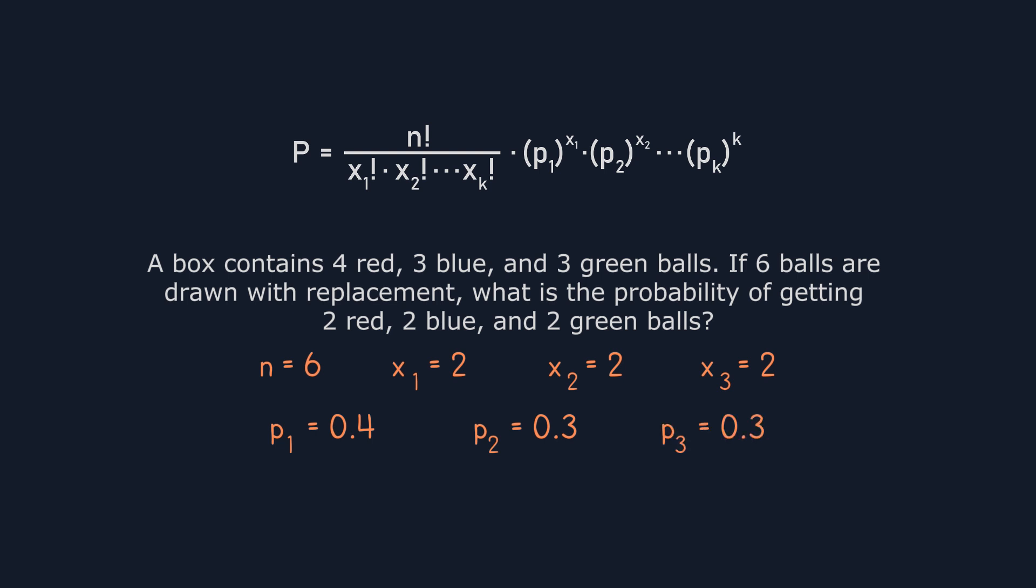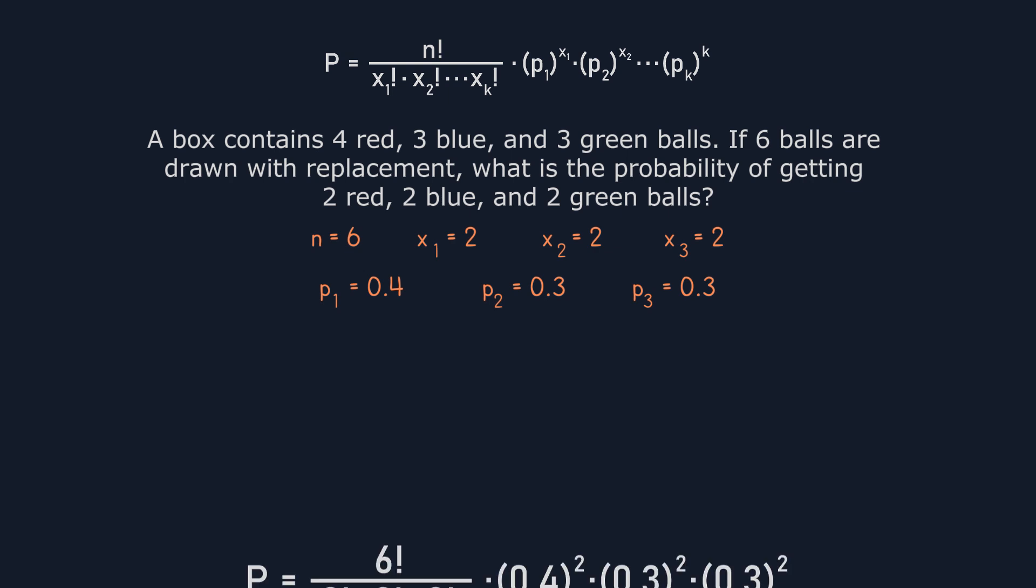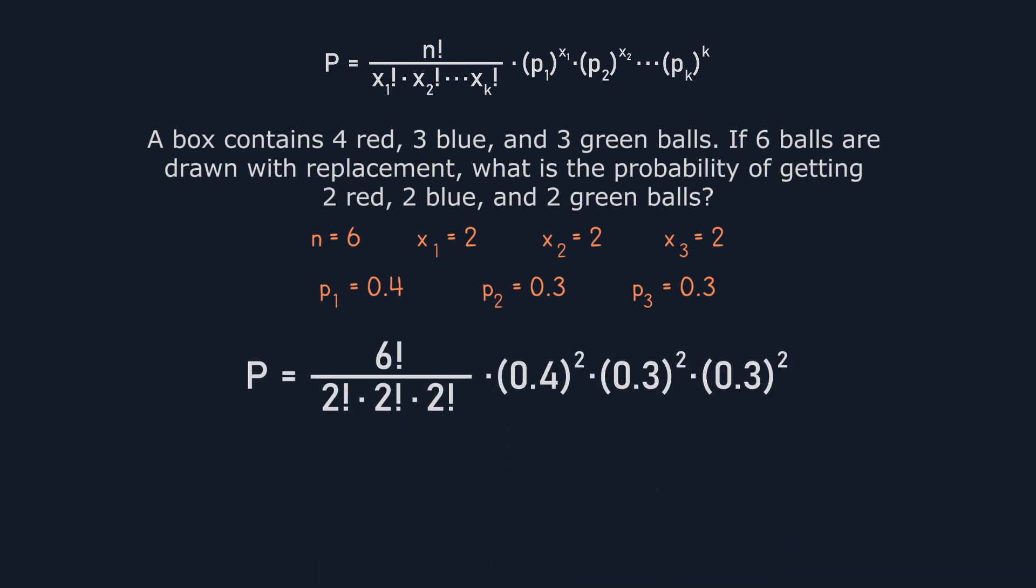The equation then becomes 6 factorial divided by 2 factorial times 2 factorial times 2 factorial, multiplied by 0.4 raised to the power of 2, multiplied by 0.3 raised to the power of 2, and lastly, multiplied by 0.3 raised to the power of 2.